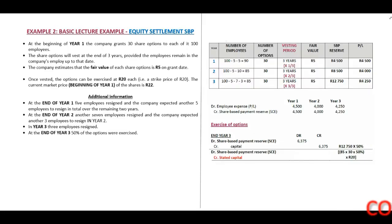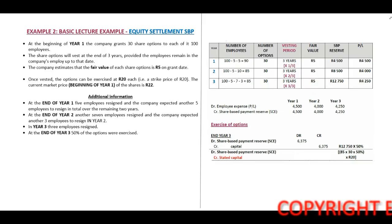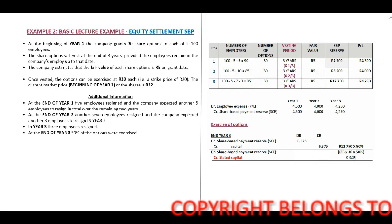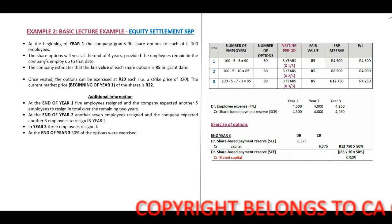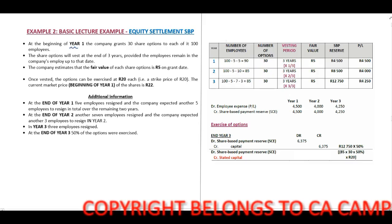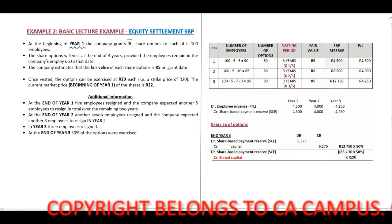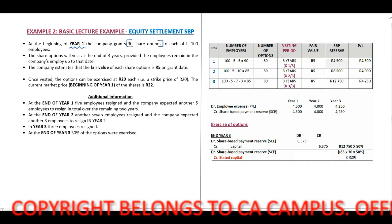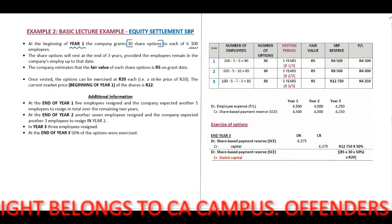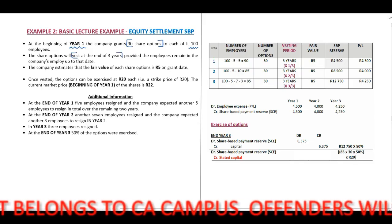We will now work through a very basic example of an equity-settled share-based payment transaction. Note that solutions are included on the right-hand side of the screen. At the beginning of year one, the company grants 30 share options to each of its 100 employees. The share options will vest at the end of year three.